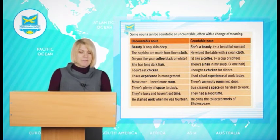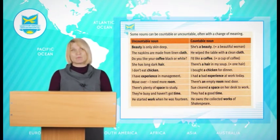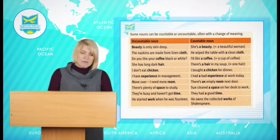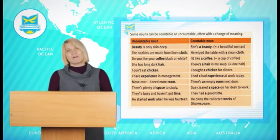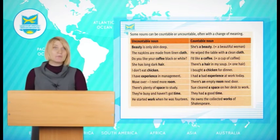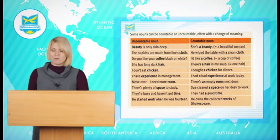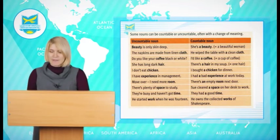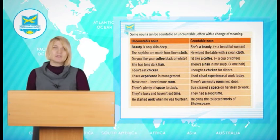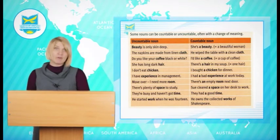Some -ing words for activities are also uncountable: dancing, running, swimming. For example: Swimming is one of the best forms of exercise — no article. We can use a countable noun plus 'of' to count many uncountable nouns: a kilo of sugar, a litre of milk, a bottle of shampoo, a can of colour, a cup of coffee.